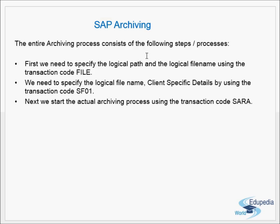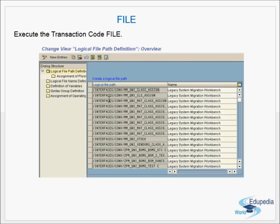So, to recap: you create a logical path and logical file name using transaction code FILE, then you maintain the client-specific details using transaction code SF01, and the third part is the actual archiving — you schedule archiving jobs or run it in dialogue mode — performed using transaction code SARA. SARA is the main transaction code for the actual archiving process; prior to that, configurations are done using FILE and SF01.